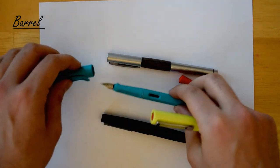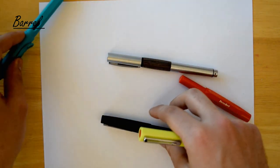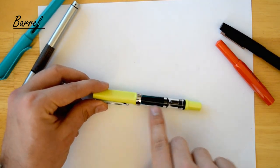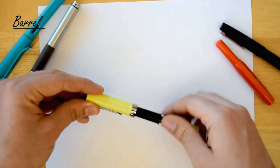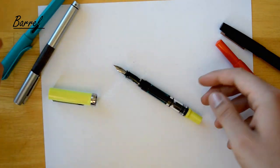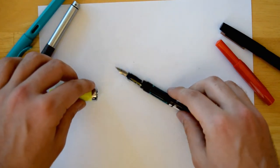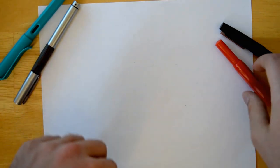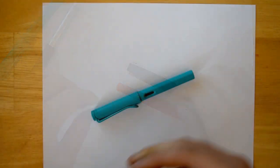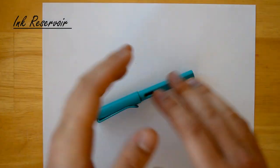On some pens called demonstrator pens, the barrels are actually clear, like this Twsbi Eco. You can see that this whole section is transparent, which allows us to see the inner workings of the pen. So this is called a demonstrator fountain pen. Other pens have an opaque body.